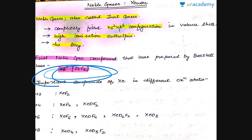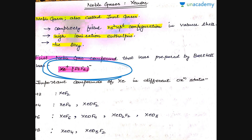This was the very first compound of noble gases prepared by Bartlett, and it led to the discovery of many xenon compounds. It was found that xenon majorly forms compounds with highly electronegative atoms — either oxygen or fluorine. In fact, all compounds of xenon contain either oxygen or fluorine. So far, no other element from the periodic table has been found incorporated into xenon compounds.